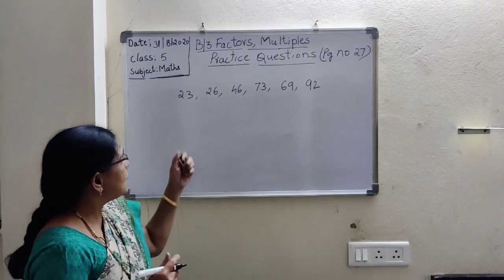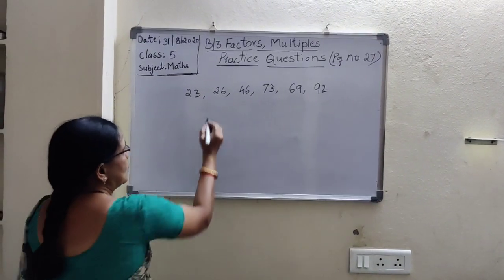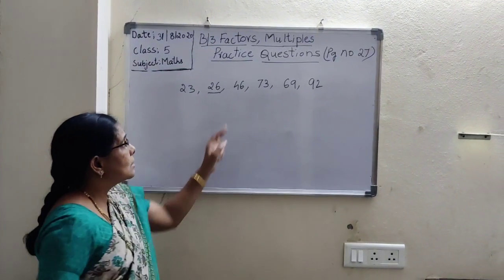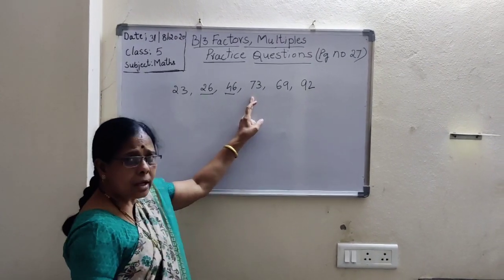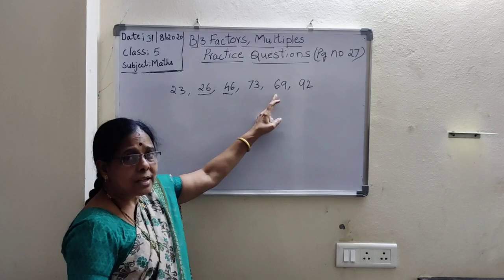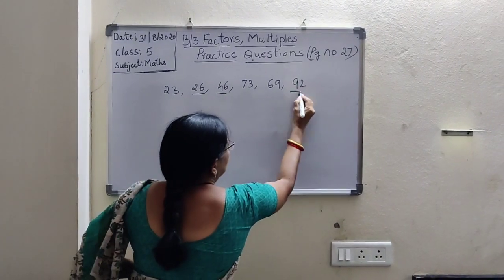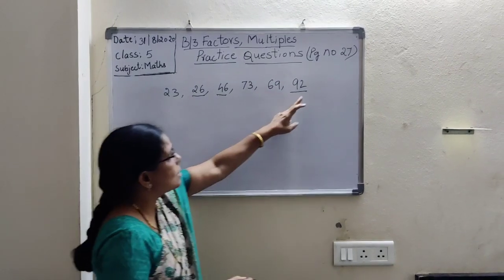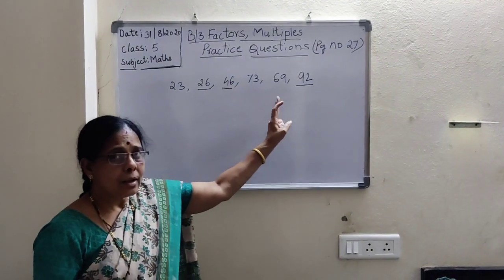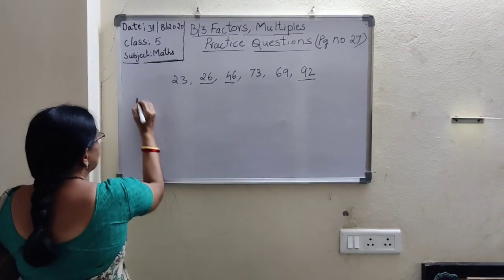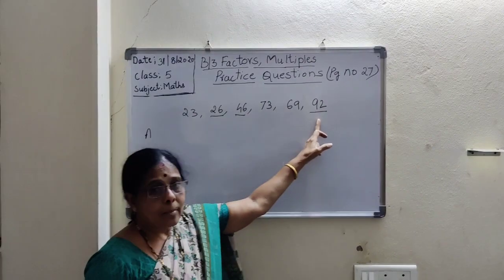So which numbers end with an even number here? 23 — not divisible. 26 — yes. 46 — yes. 73 — no. 69 — no. 92 — yes. So these numbers end with even numbers, so these numbers are divisible by 2. You have to write the answer. Sorry children — these numbers are divisible by 2.